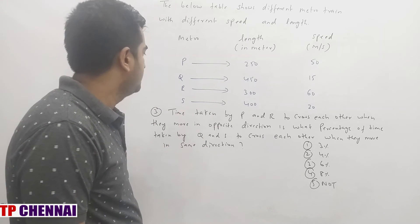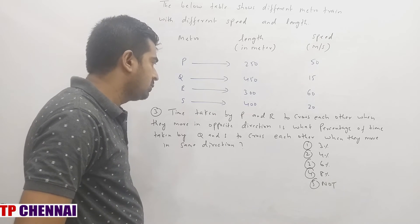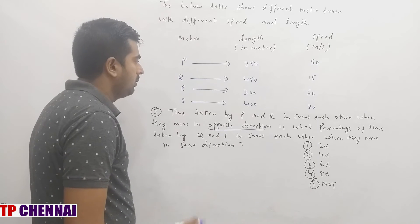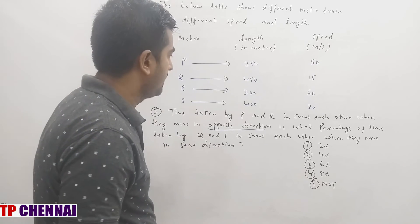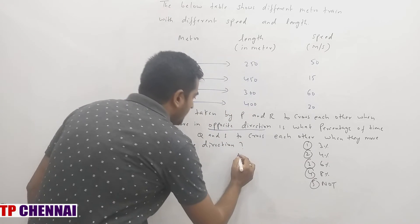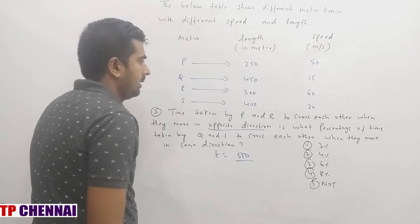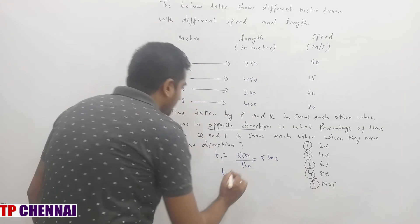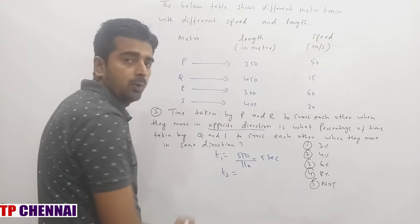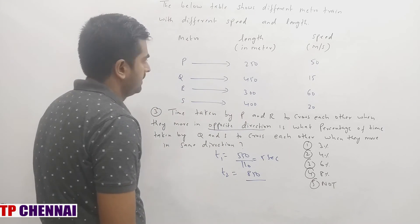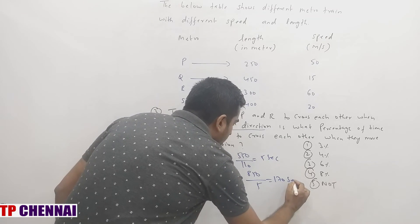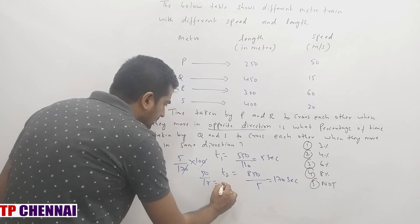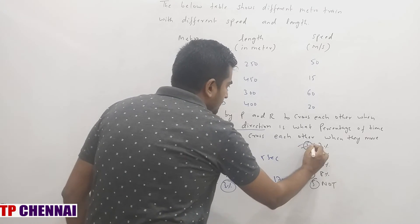Third DI question: Time taken by T and R to cross each other moving in opposite direction, as a percentage of time taken by Q and S crossing each other in same direction. For T and R opposite: combined length = 250+300 = 550, relative speed = sum of speeds, time = 5 seconds. For Q and S same direction: combined length = 450+400 = 850, relative speed = difference of speeds, time = 170 seconds. Ratio: 5/170×100 ≈ 2.94%, nearest to 3%, which is the first option.